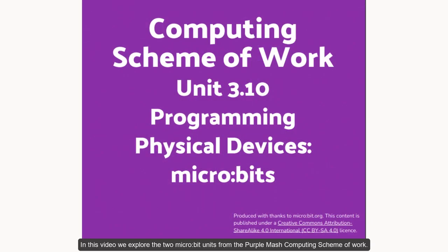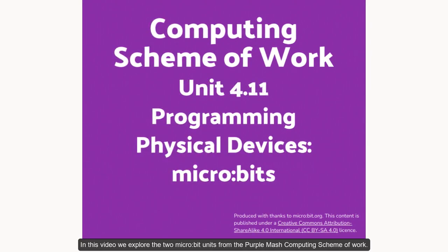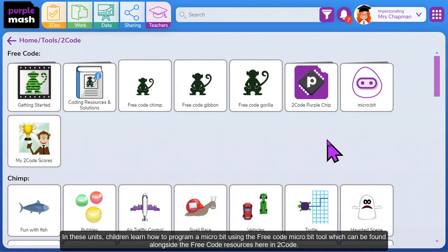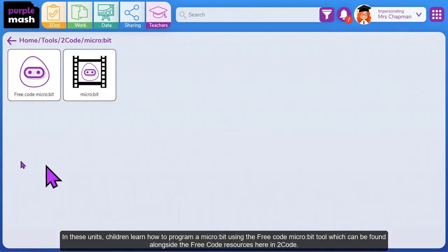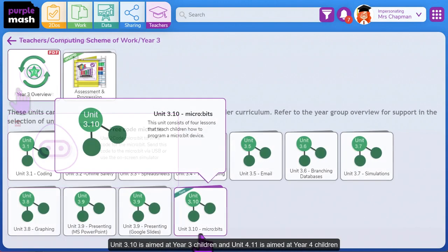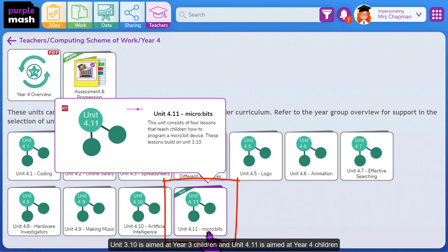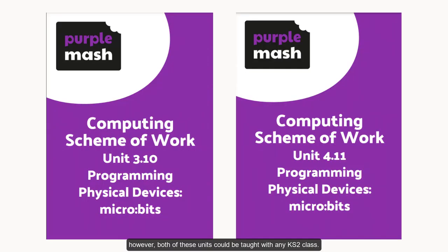In this video we explore the two microbit units from the PurpleMASH computing scheme of work. In these units children learn how to program a microbit using the FreeCode microbit tool, which can be found alongside the FreeCode resources in 2Code. Unit 3.10 is aimed at Year 3 children and Unit 4.11 is aimed at Year 4 children. However, both of these units could be taught with any Key Stage 2 class.